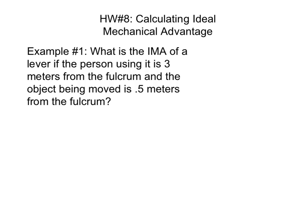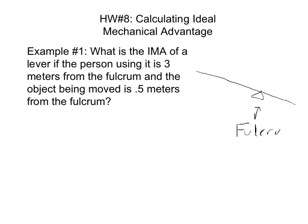Let's take a look at this example from homework number eight: what is the IMA, or ideal mechanical advantage, of a lever if a person using it is three meters from the fulcrum? Let's draw a little diagram — here's our lever and here's our fulcrum, otherwise known as the pivot point, where the energy will be transferred and multiplied. The person pushing down on the lever is adding force into the system and they are three meters from the fulcrum.